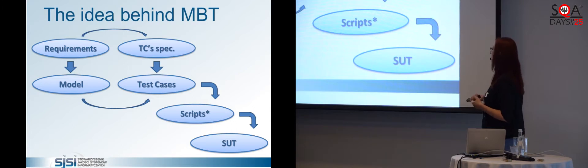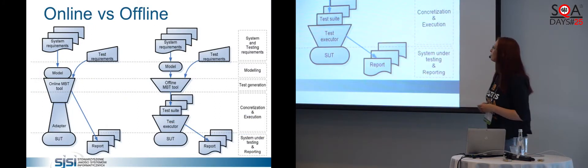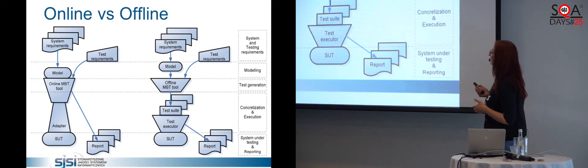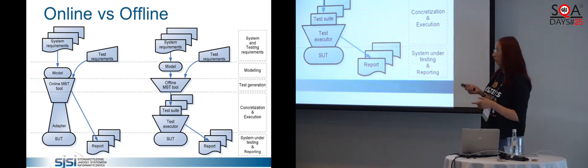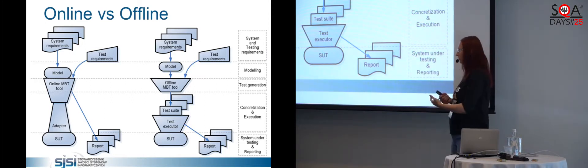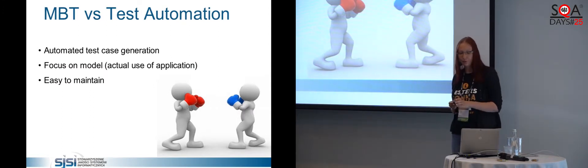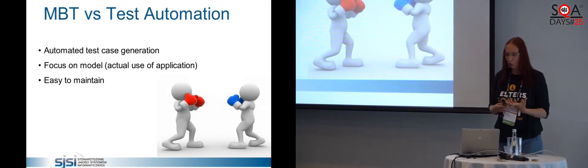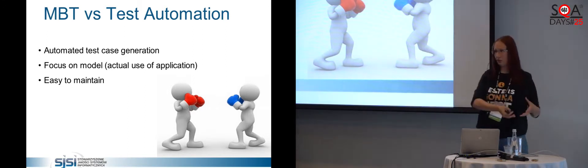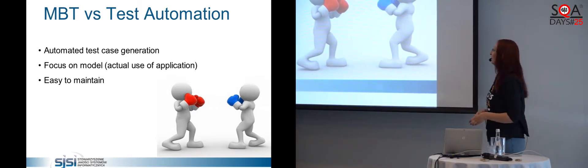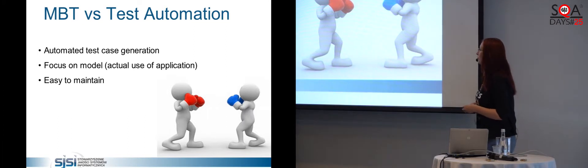We can also create automated scripts and put them to test the system under test. This can be done in two ways: offline — where we first generate the full set of test cases and then run them against the system — or online — where test cases are generated on the fly while we are actively testing. This is different from standard test automation: we are not automating already existing scripts, but automating the generation of the test cases themselves, focusing on modeling how the system behaves.